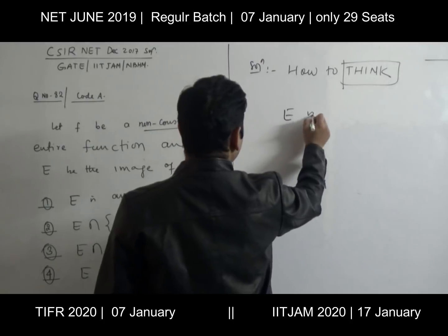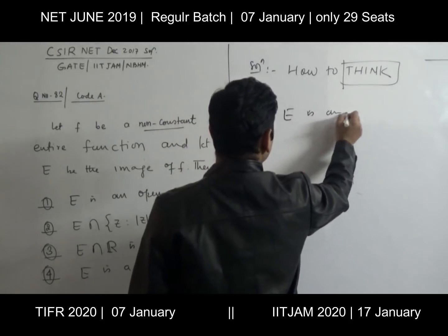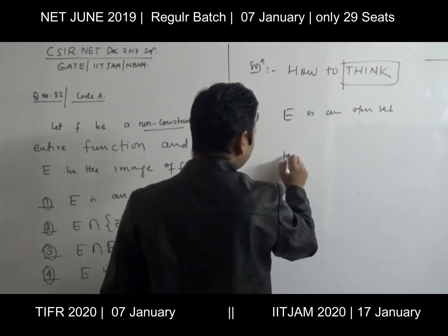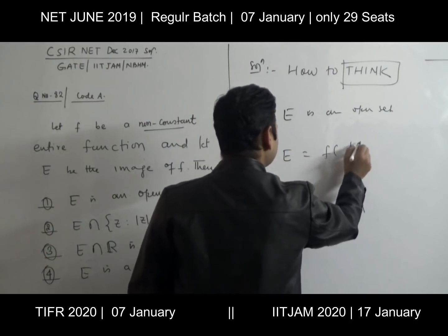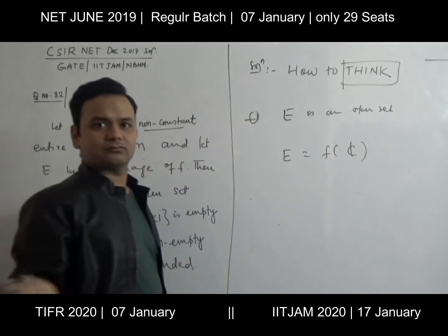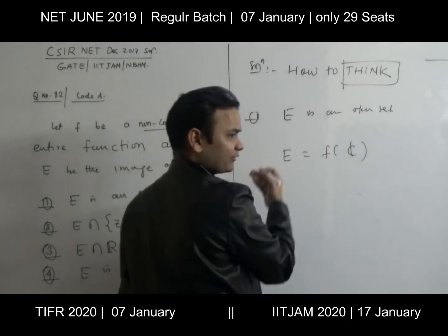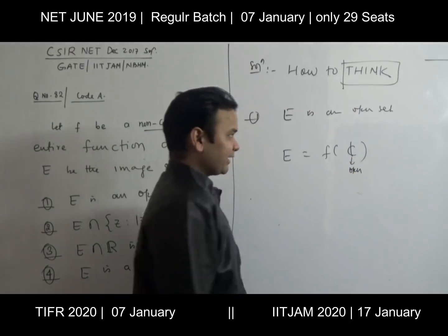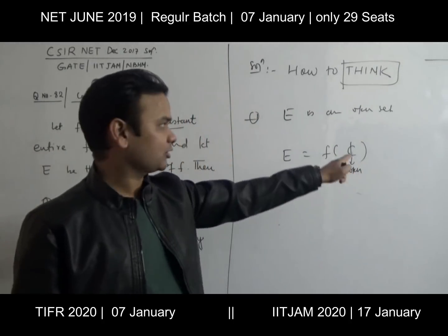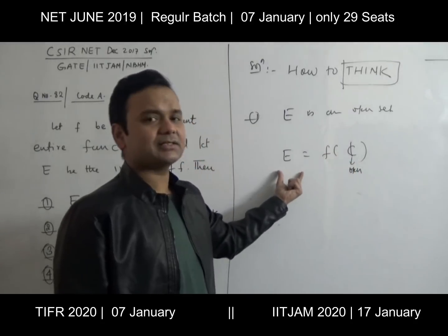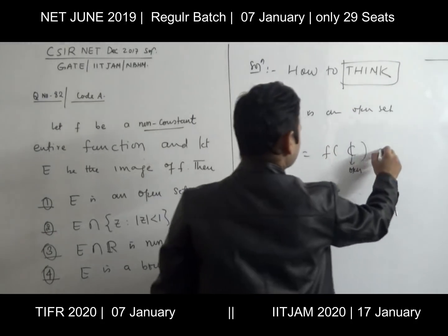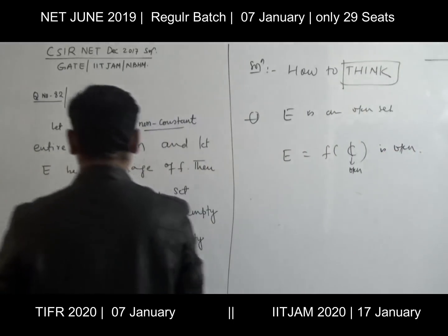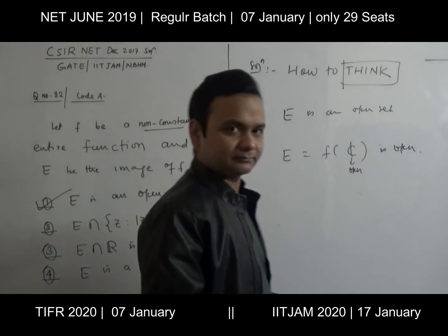What is the first option? E is an open set. What is E? It is the range set of F — which is F of C. Now C is an open set. Since F is entire and non-constant, by the Open Mapping Theorem, the image of an open set is open. So E is going to be open. This statement is correct — E is an open set.